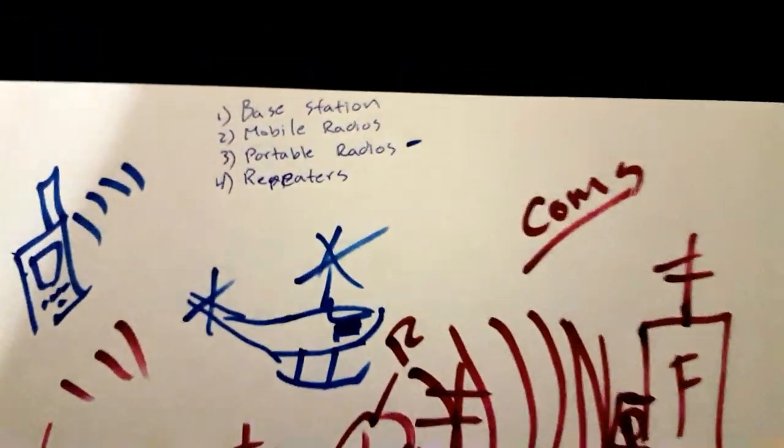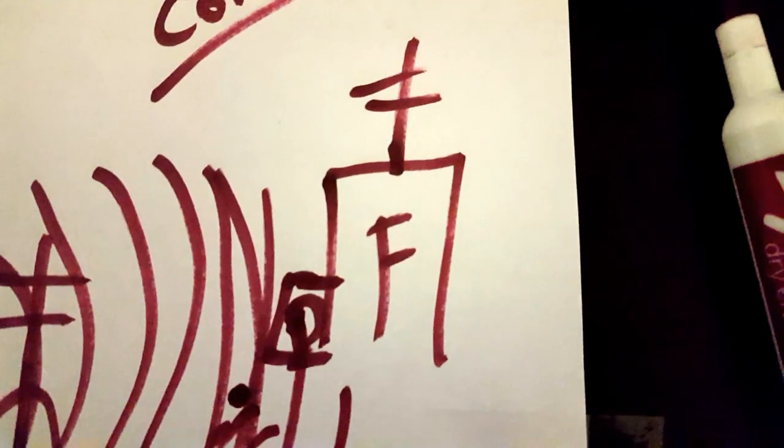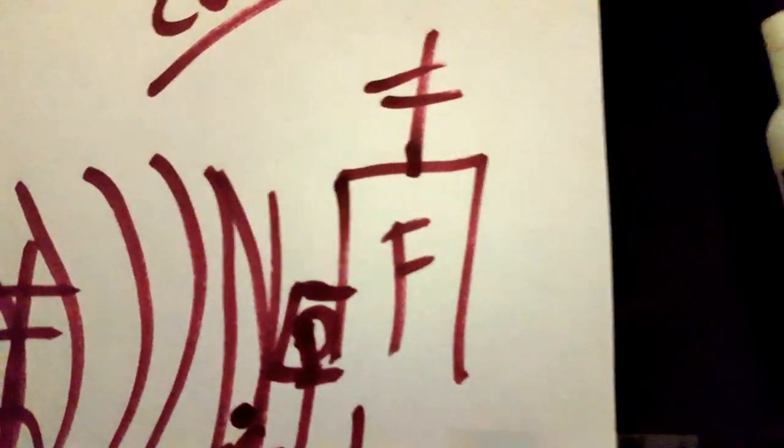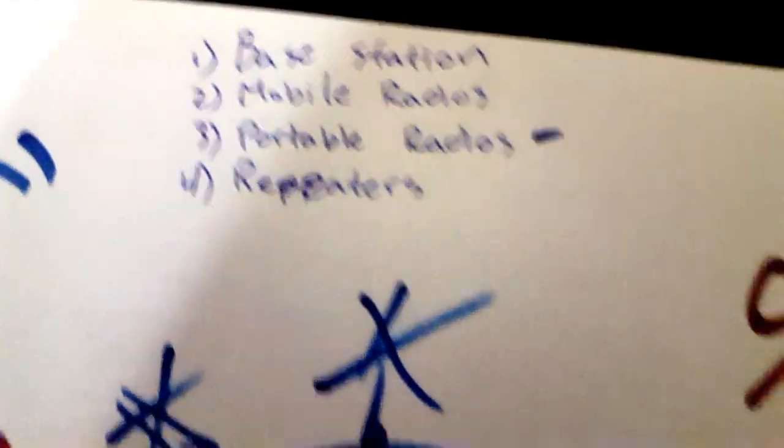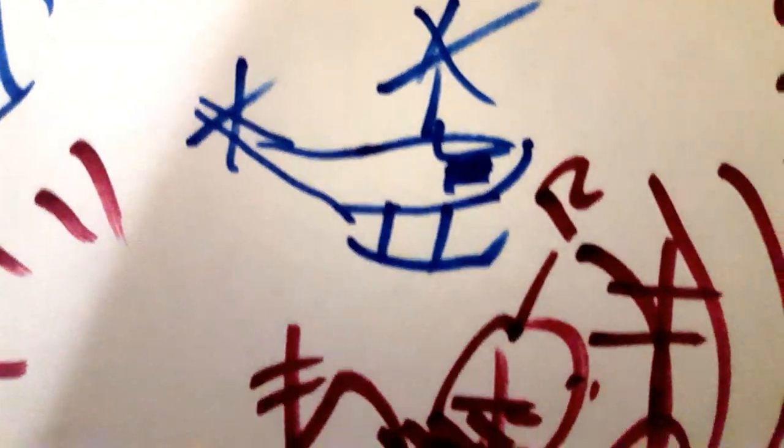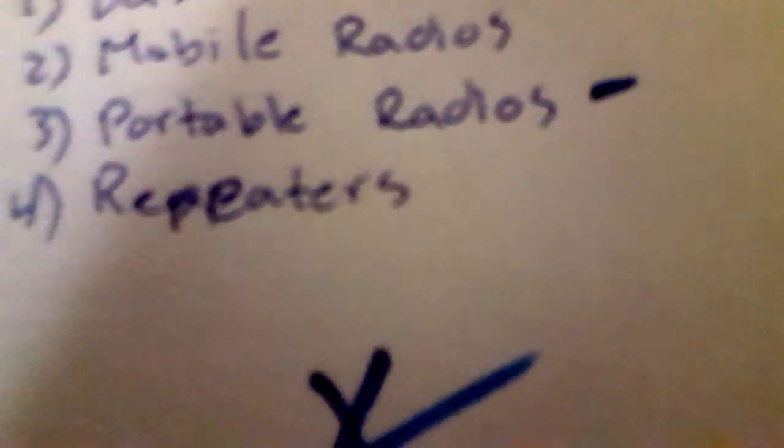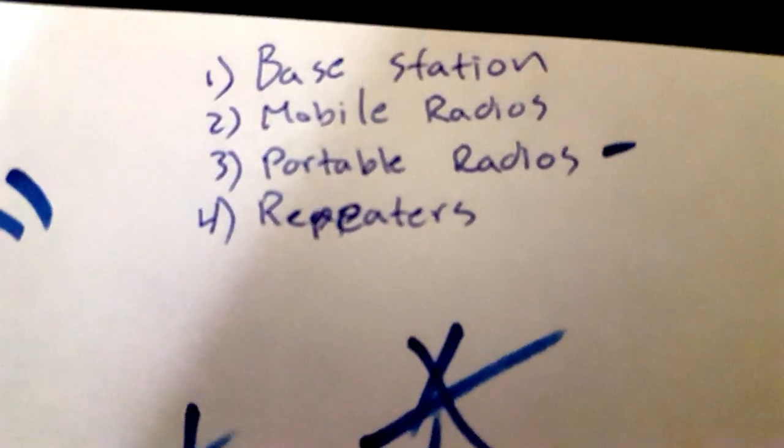Just a little review of communications: base stations are gonna be your hospitals, dispatch, big radios in buildings where you're gonna be transporting the patient from or to for the most part. Mobile radios are gonna be found in your automobiles, so anything that transports you. Portable radios are portable—they go anywhere with you.